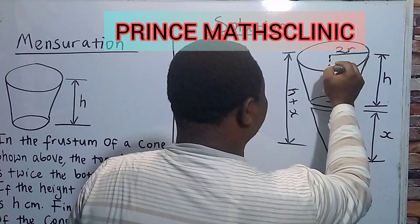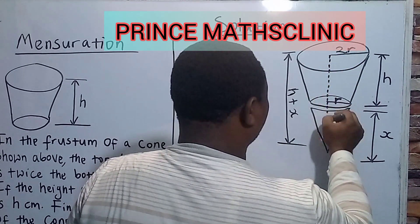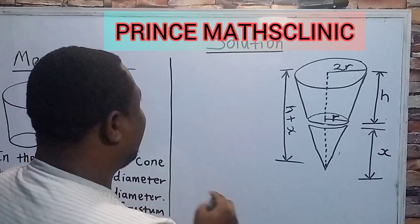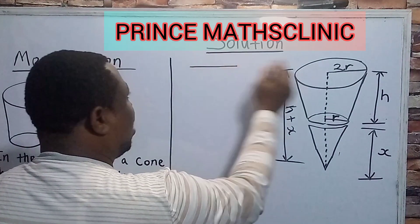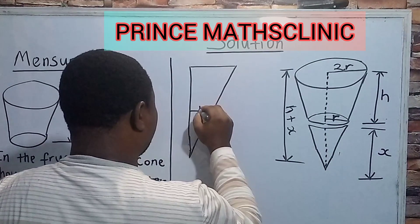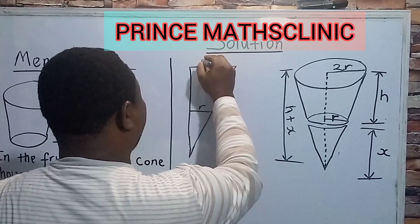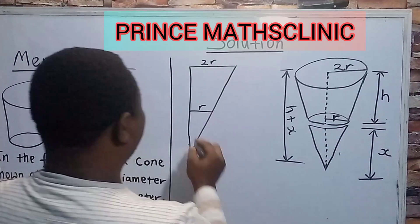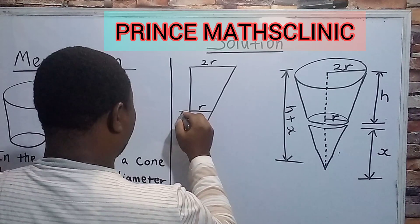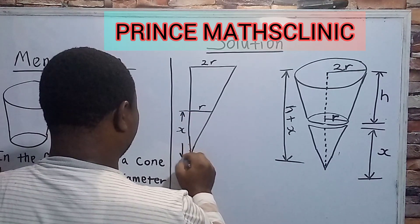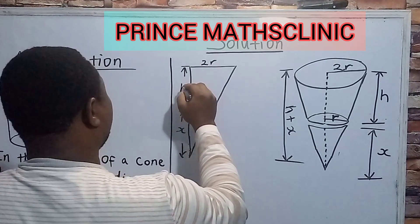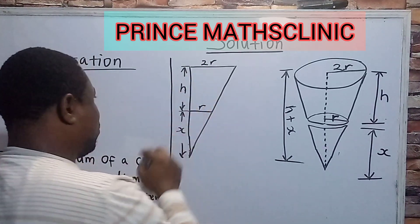Now, if I now draw a line like this, so what it then means is that I have a triangle that looks like this, such that this is small r, this is my 2r. Then from this point to this point, we called it x. Right? Then from this point to this particular point, we called it what? h. Remember.